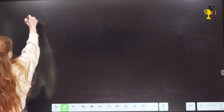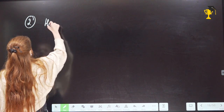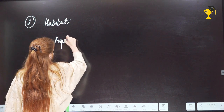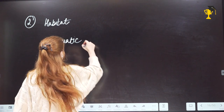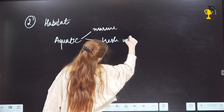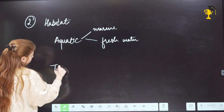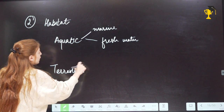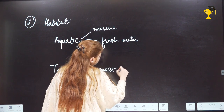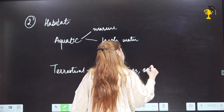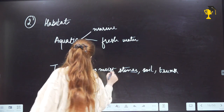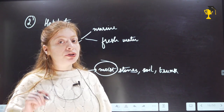The second characteristic is their habitat — where they are found. They are found in aquatic habitats, both freshwater and marine. Or they can be found in terrestrial environments, but only in moist places — on moist stones, moist soil, or moist trunks of trees. Moistness is necessary because they do not have vascular tissue, so they cannot survive without water present around them.